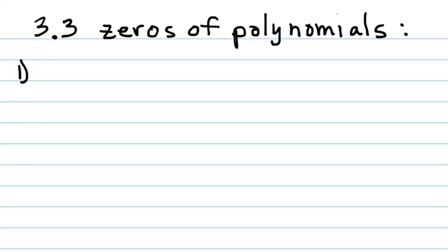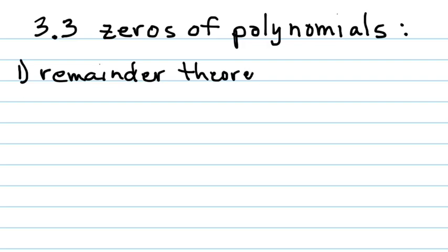Now we've looked at three different ways to use synthetic division to find the answers to specific questions. First, we were able to use something called the remainder theorem, which tells you that f of x equals the remainder — whatever you get left over after you do synthetic division with a specific number.